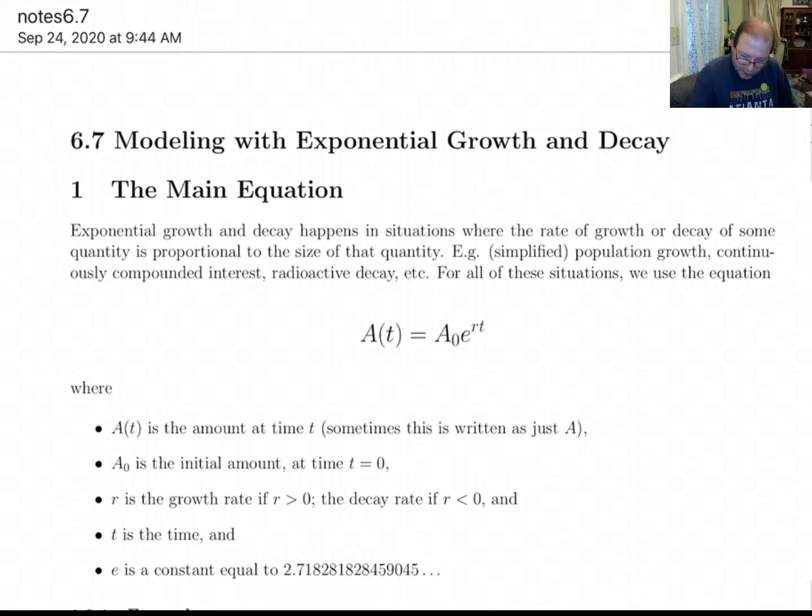Exponential growth and decay happens whenever you have a situation where the rate of growth or the rate of decay is proportional to the size of that quantity. This gets used in simplified population growth models, continuously compound interest, radioactive decay, and a bunch of other things. And in all these things we use this equation.